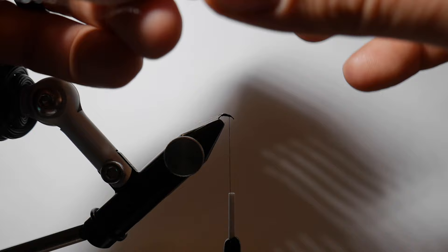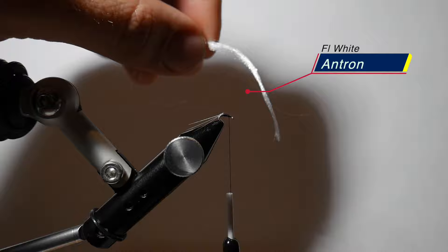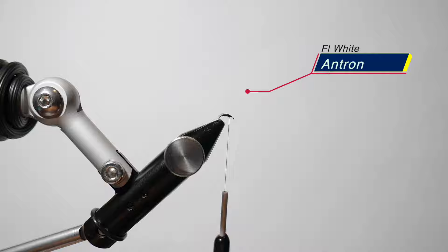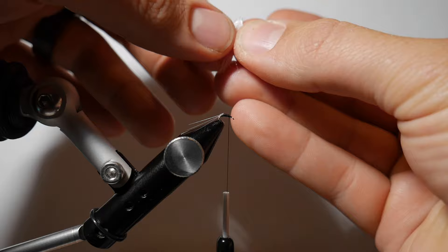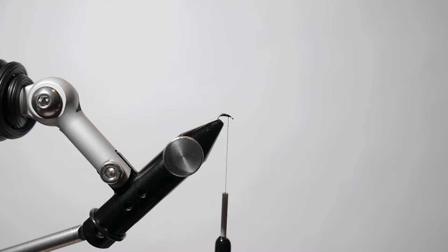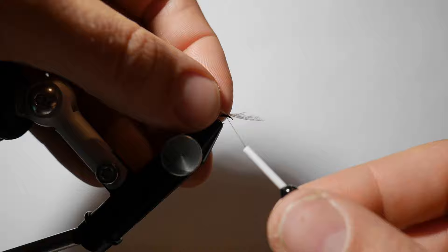All right, for the next step of this fly I'm going to take some fluorescent white antron and this is about a three to four inch piece. We want to cut that down to about an inch, so I'm just going to trim that up here and it looks about this length when you're done. And then what I want to do is take it right down the middle and split it apart. We do not need that whole piece of antron, so this will do two flies. We're going to split it right down the middle.